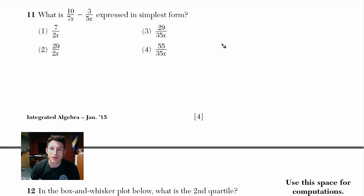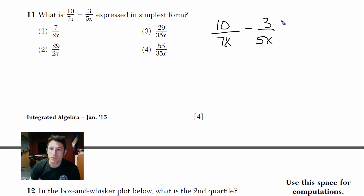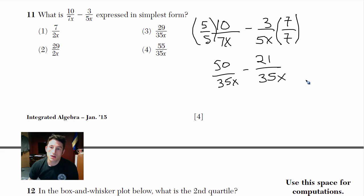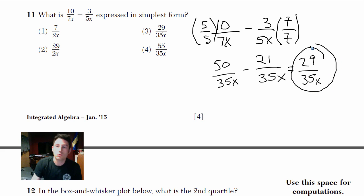So let's do that — find common denominators. I would just pick a number they both go into. I'll multiply by 7 over 7 here, and 5 over 5 on the other side. So we get 50 over 35x minus 21 over 35x. 50 minus 21 is 29, so we get 29 over 35x. I don't think that reduces because 29 is a prime number.